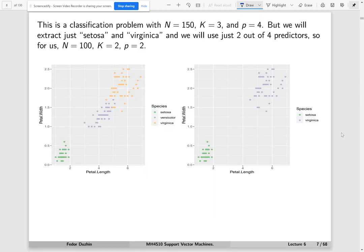This is a classification problem. The number of observations is 150 with three classes and there are four predictors. But I'm going to only extract two predictors so that I can plot the data.